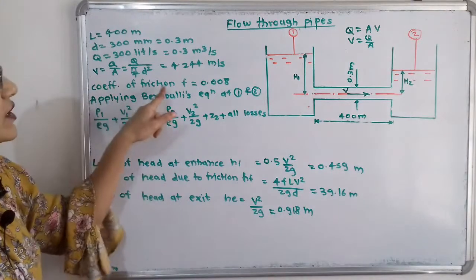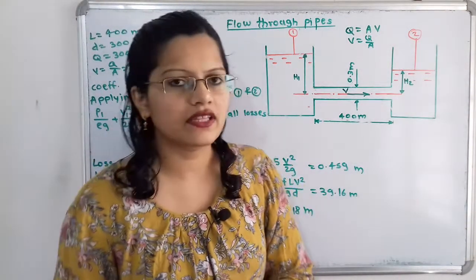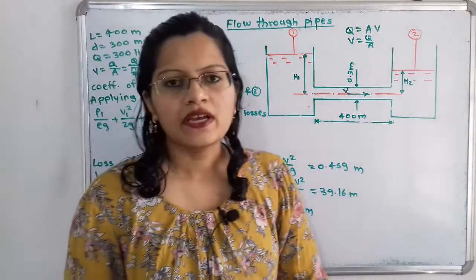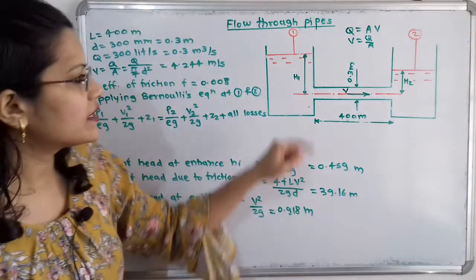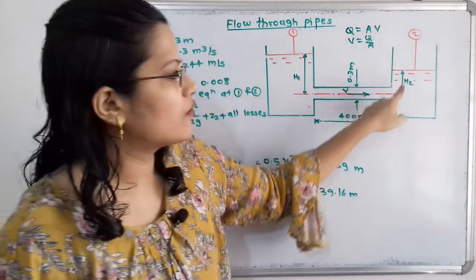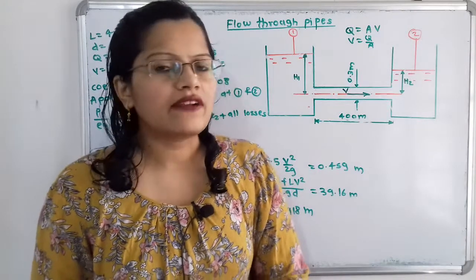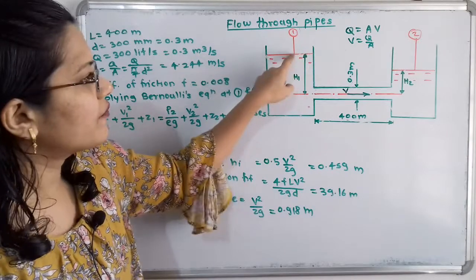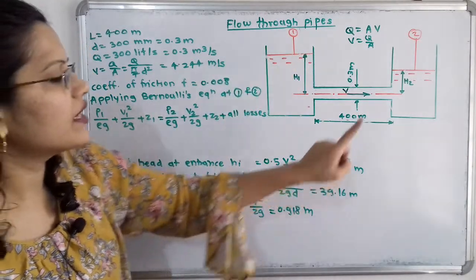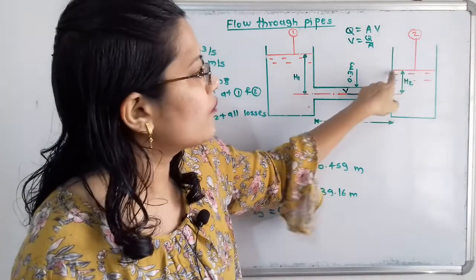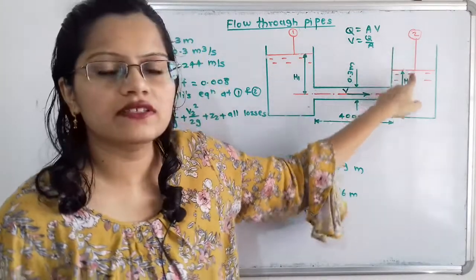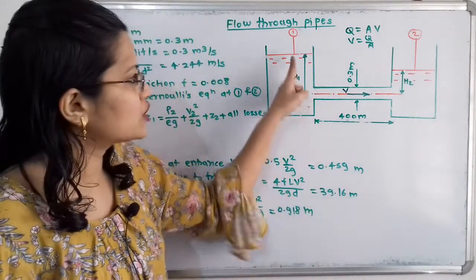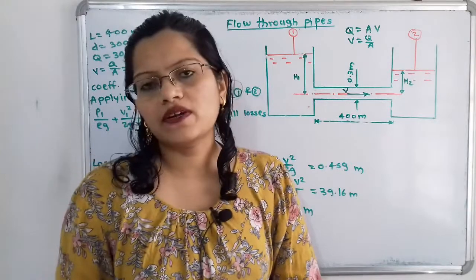The coefficient of friction F is given as 0.008, which we will use to calculate frictional losses. To find the difference in elevation of the water surfaces in the two tanks, we consider section 1 at the free surface of the first tank and section 2 at the free surface of the second tank.